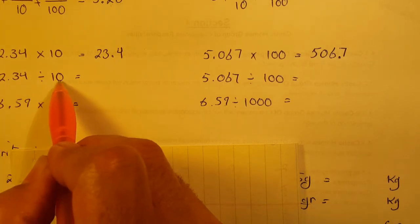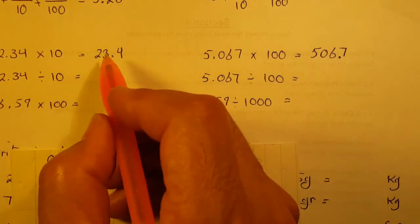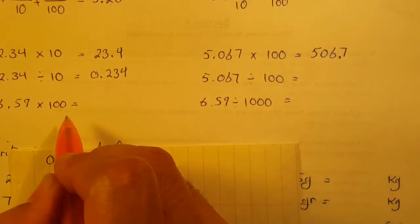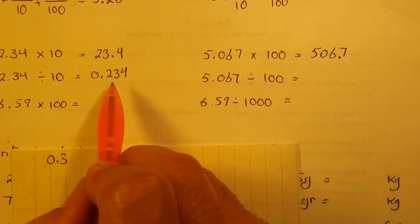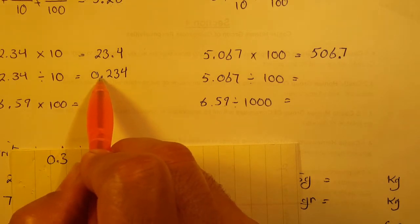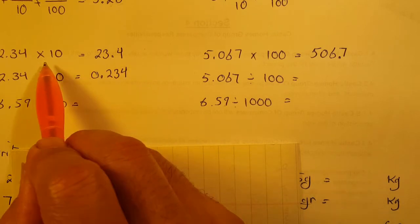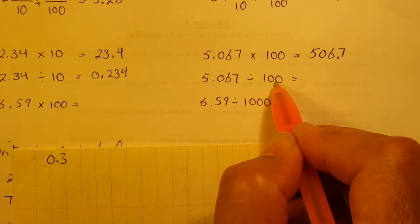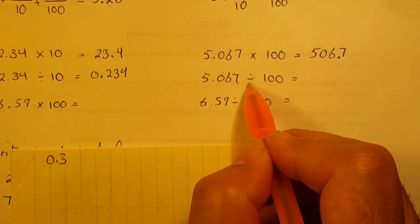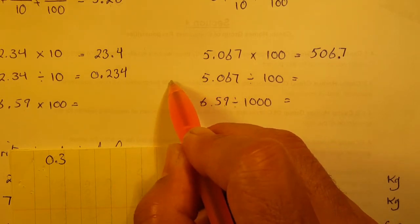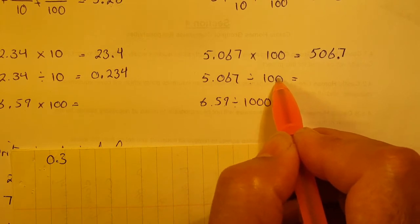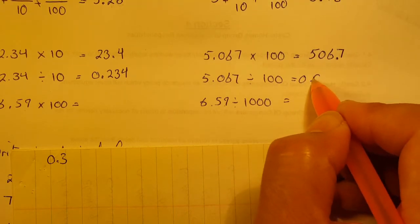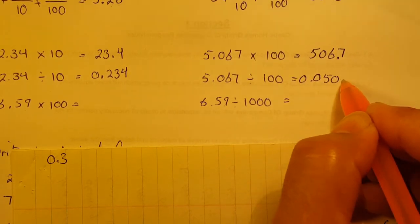There is 1 zero, so the decimal moves 1 digit to the left, giving 0.234. The point of attention in all of these is the decimal point — based on that we can find the answer easily. For 5.067 divided by 100: it's division so the decimal moves to the left, 2 zeros means 2 digits, giving 0.05067.